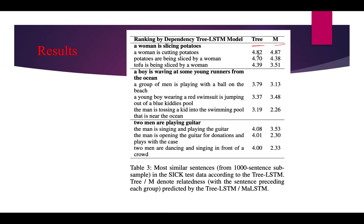Looking at example predictions: for 'A woman slicing potatoes' vs. 'A woman cutting potatoes' — clearly similar — tree LSTM gives 4.82 and Manhattan LSTM gives 4.87, which is better. For 'Tofu is being sliced by a woman' vs. 'A woman slicing potatoes', these are completely different sentences since the object being cut differs. Tree LSTM still rates them as semantically similar, but Manhattan LSTM correctly gives a lower similarity score.